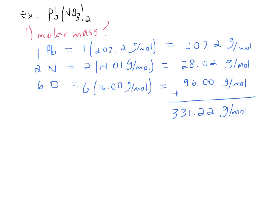Again you need to distribute. There are three O's in nitrate, but we have two nitrates, so three times two makes six oxygens. Six times the molar mass of oxygen from the periodic table, which is 16 grams per mole, gives you 96 grams per mole. Adding all of these up, we get 331.22 grams per mole — that is the molar mass of lead(II) nitrate.